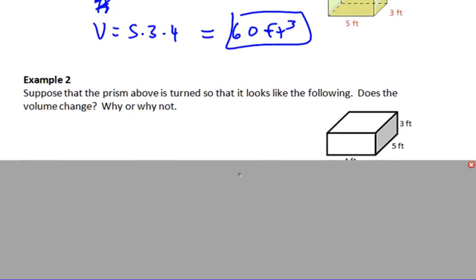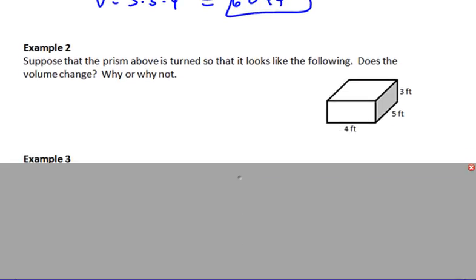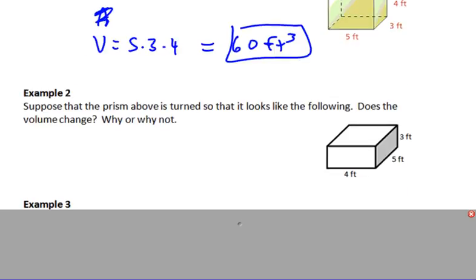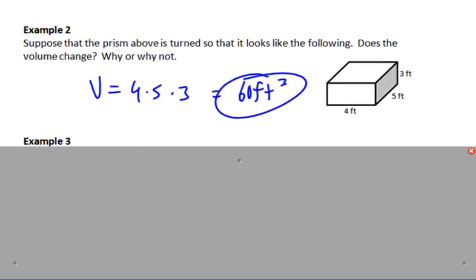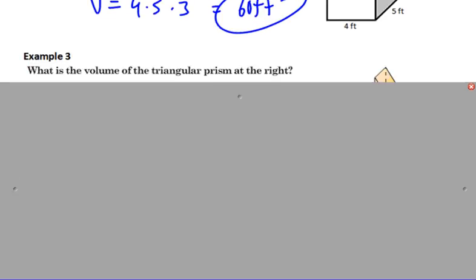Example 2. Suppose that the prism above is turned so that it looks like the following. So we just turned it. Does the volume change? Why or why not? Well, it shouldn't change. Let's check it out. Let's do the volume. Area of the base would be 4 times 5, that's 20, times 3 would then get you 60 feet cubed. It is still the same shape. It will still have the same volume in it no matter how it's orientated.